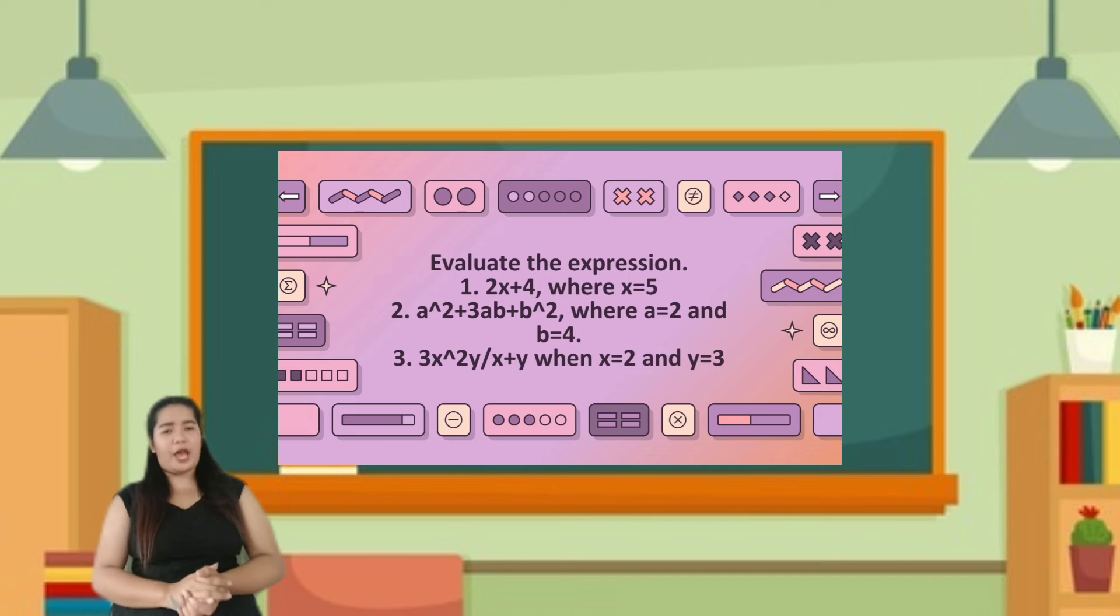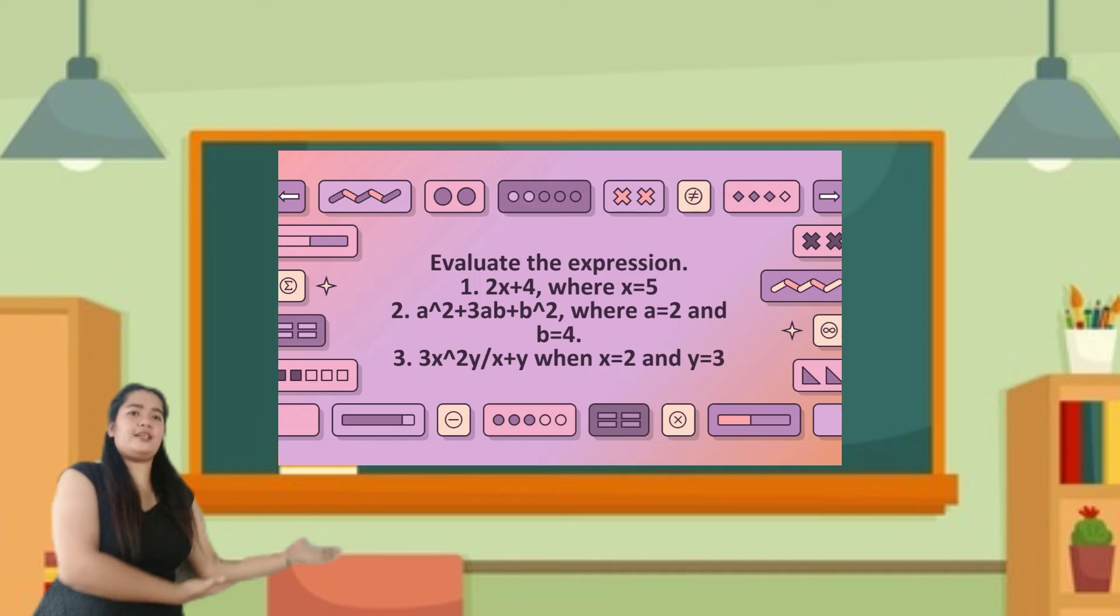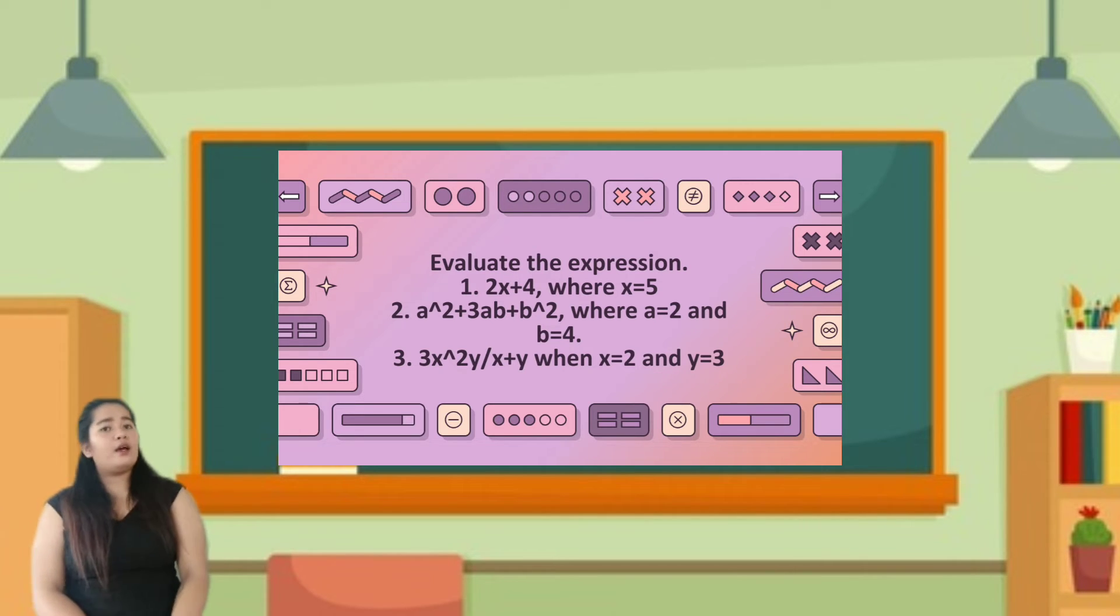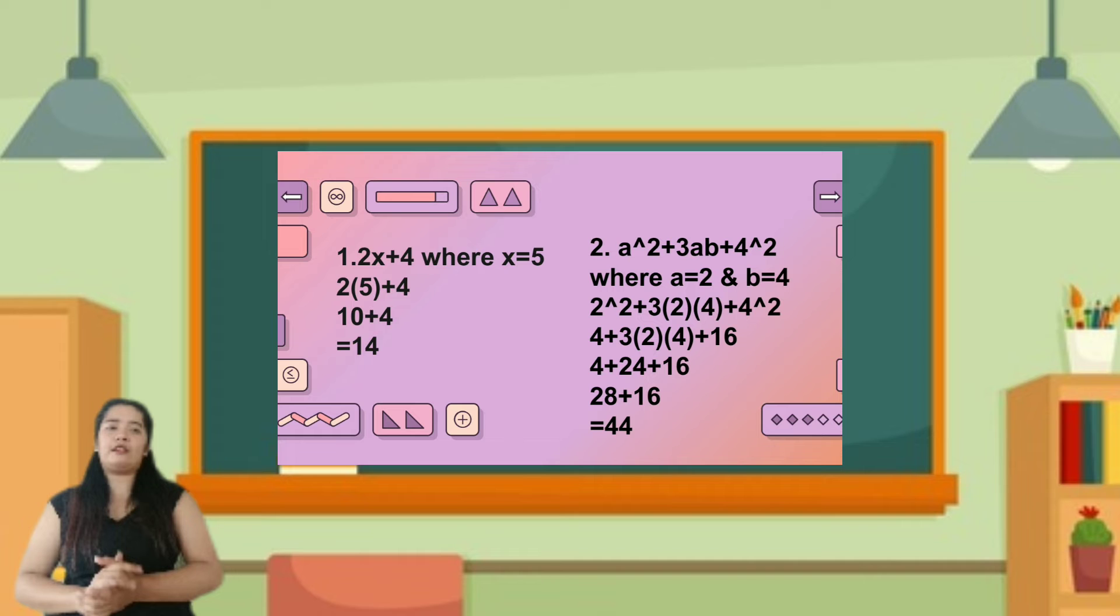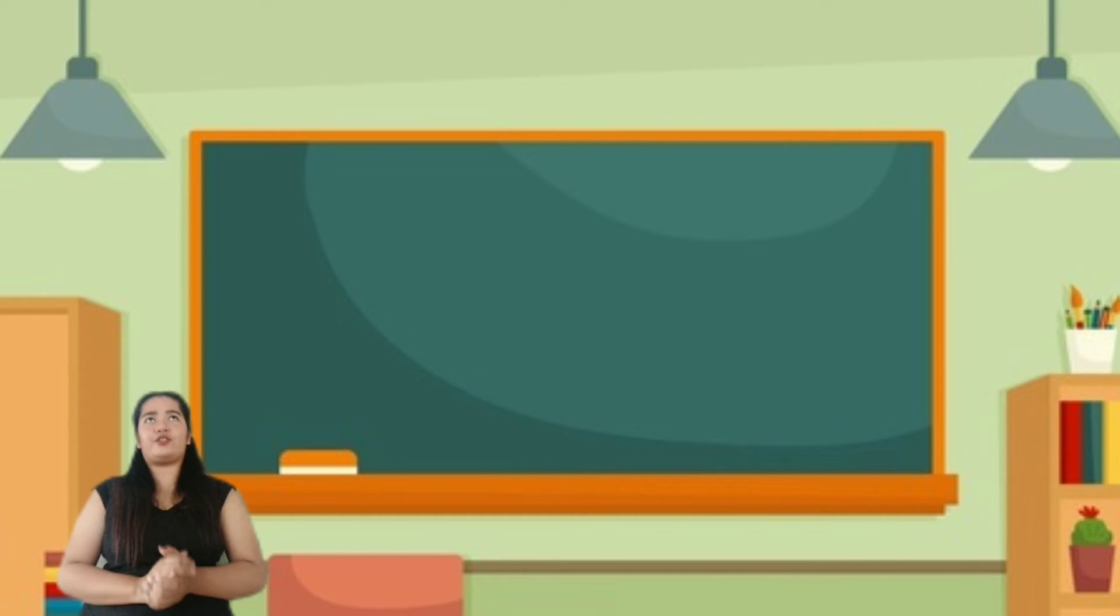Now, evaluate the expression, who wants to try it on the board? So, Kelsey, Nell, and Cassie answer it on the board. Number one is 2x plus 4, where x is equal to 5. Number two, a squared plus 3ab plus b squared, where a is equal to 2 and b is equal to 4. Number three, 3x squared y over x plus y, when x is equal to 2 and y is equal to 3. Good job, the three of you.